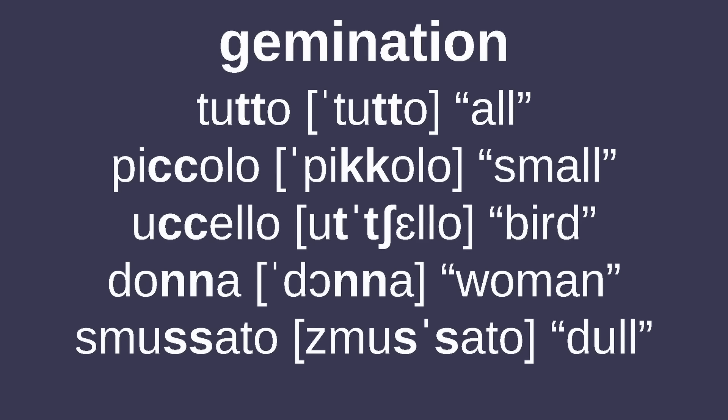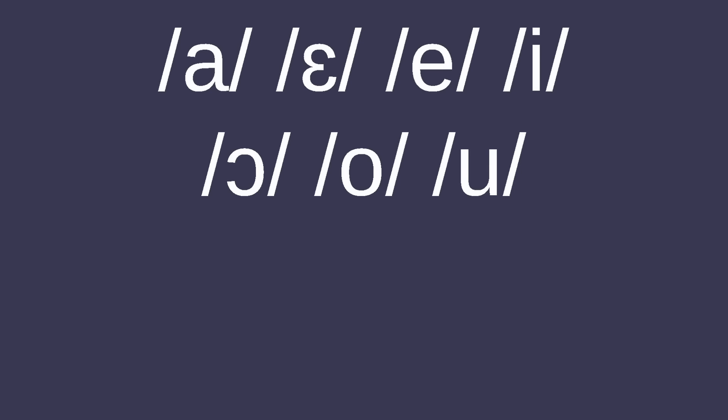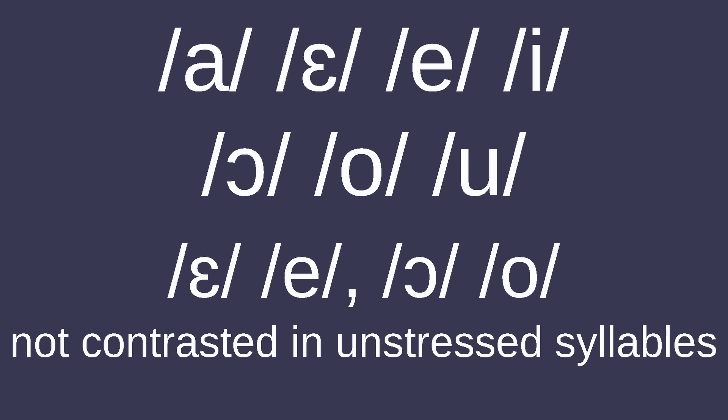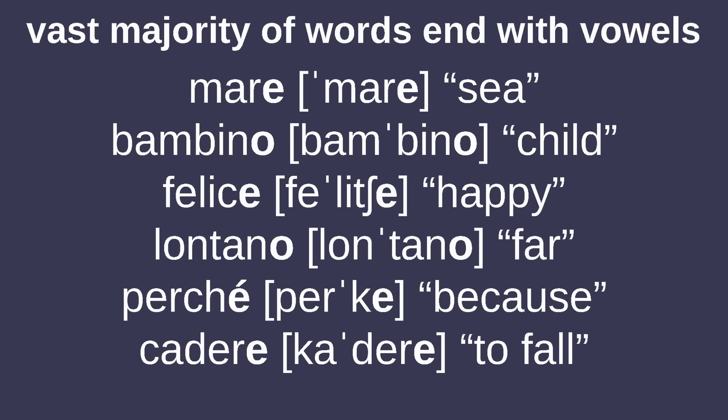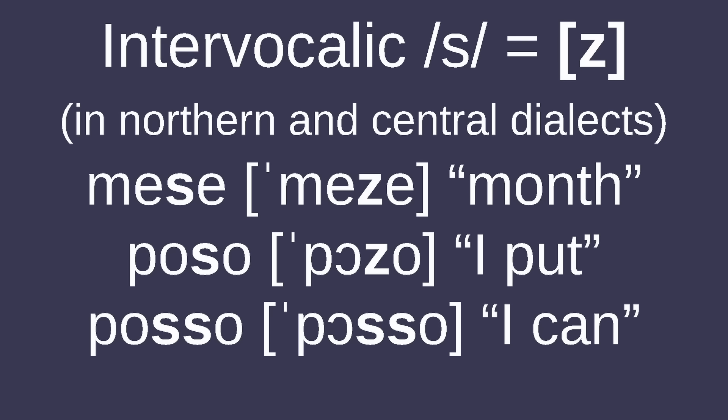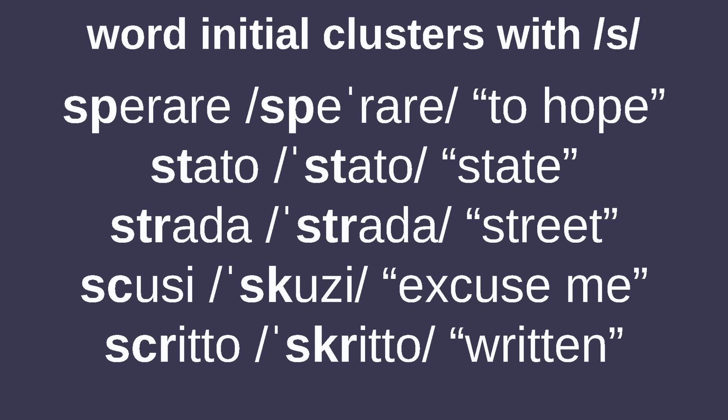It's Standard Italian time. What sticks out most about Italian phonology is gemination, which entails having doubled consonants, which were lost in most other non-Italic Romance languages. Italian has seven vowels, of which the close mid and open mid ones aren't distinguished in unstressed syllables, and the vast majority of nouns, adjectives, and verbs all end with vowels. Intervocalic S is typically voiced /z/ in Northern and Central dialects, while geminated S between vowels remains voiceless. Italian maintains word-initial clusters with S, as in SP, ST, SC, and SCR, which had an /a/ inserted in front of them in many other Romance languages.